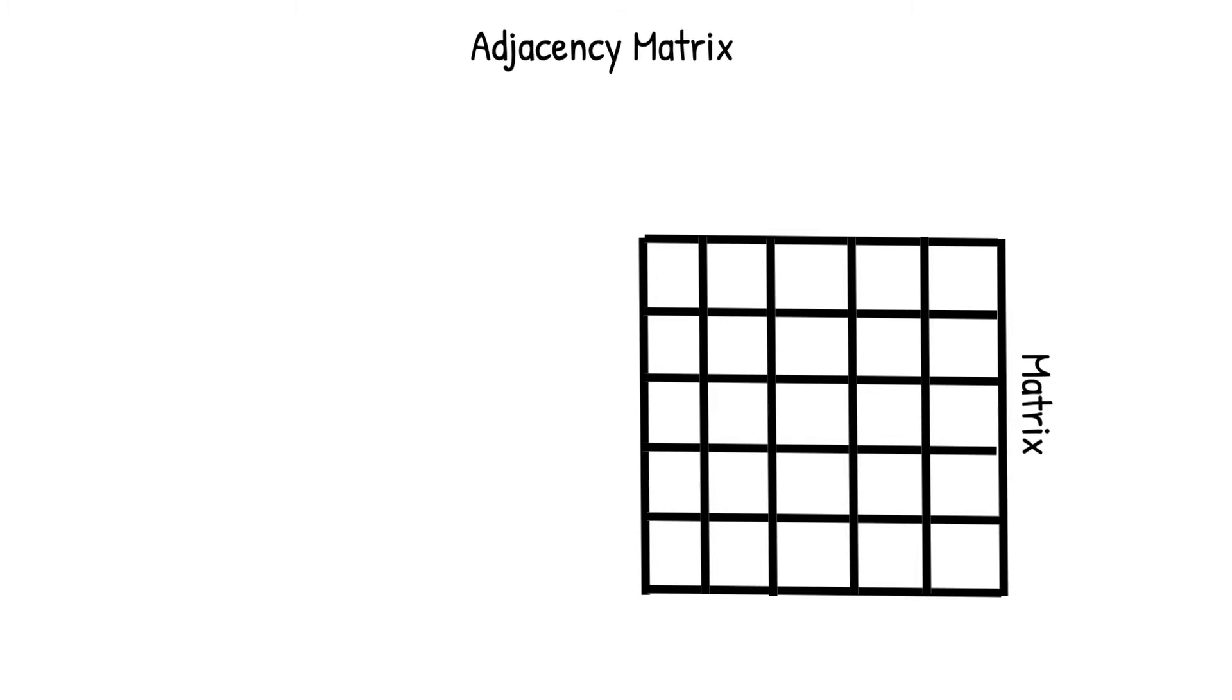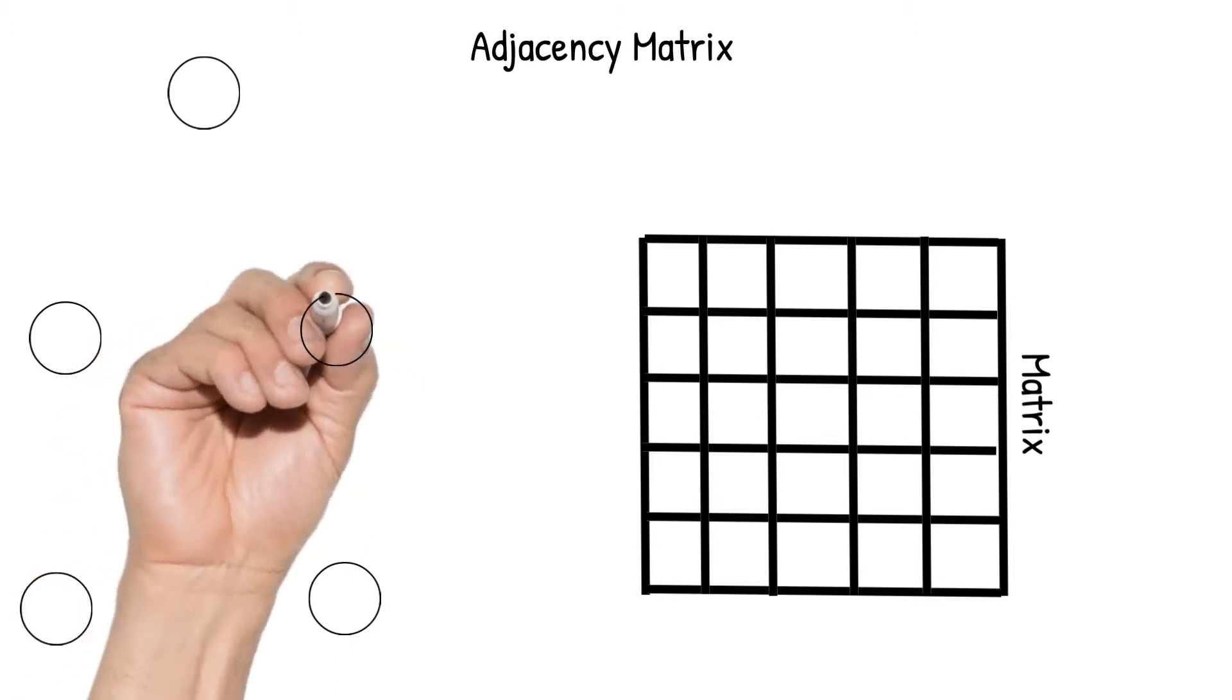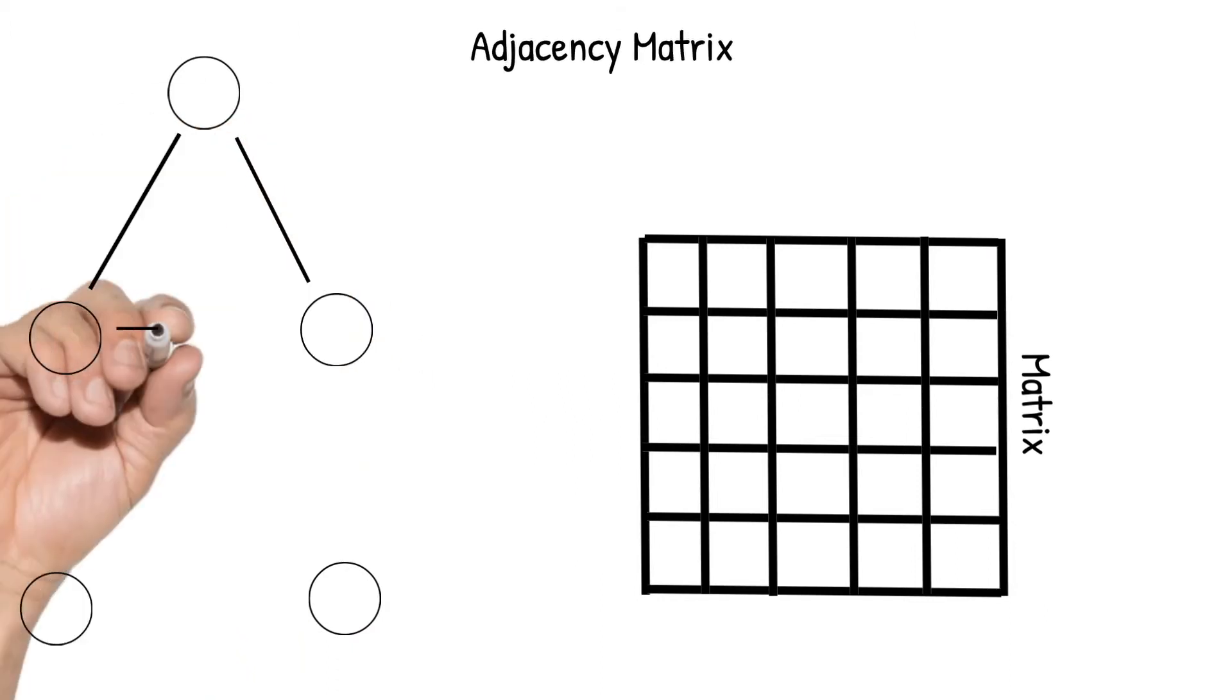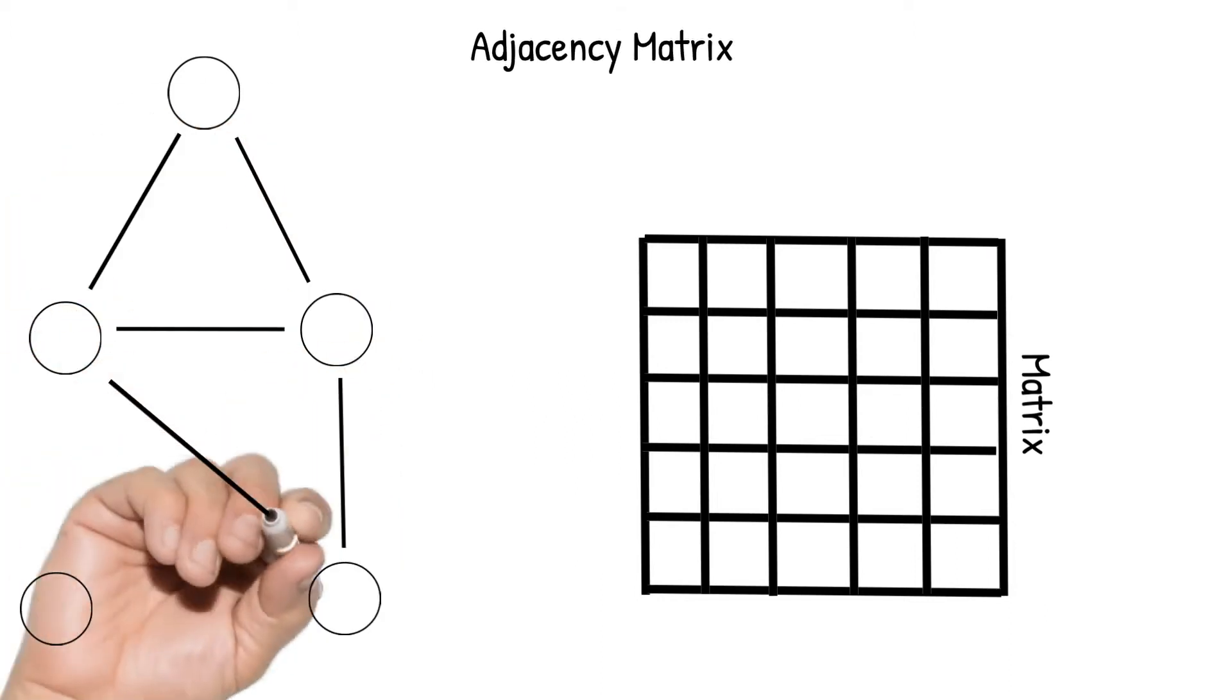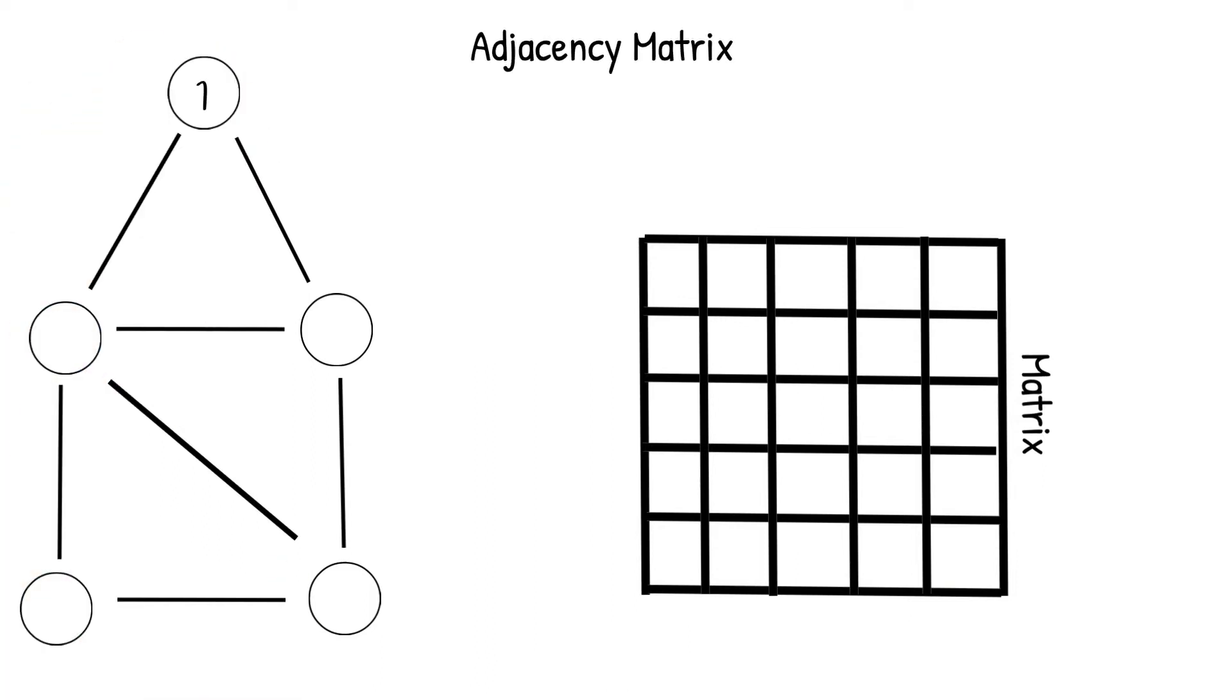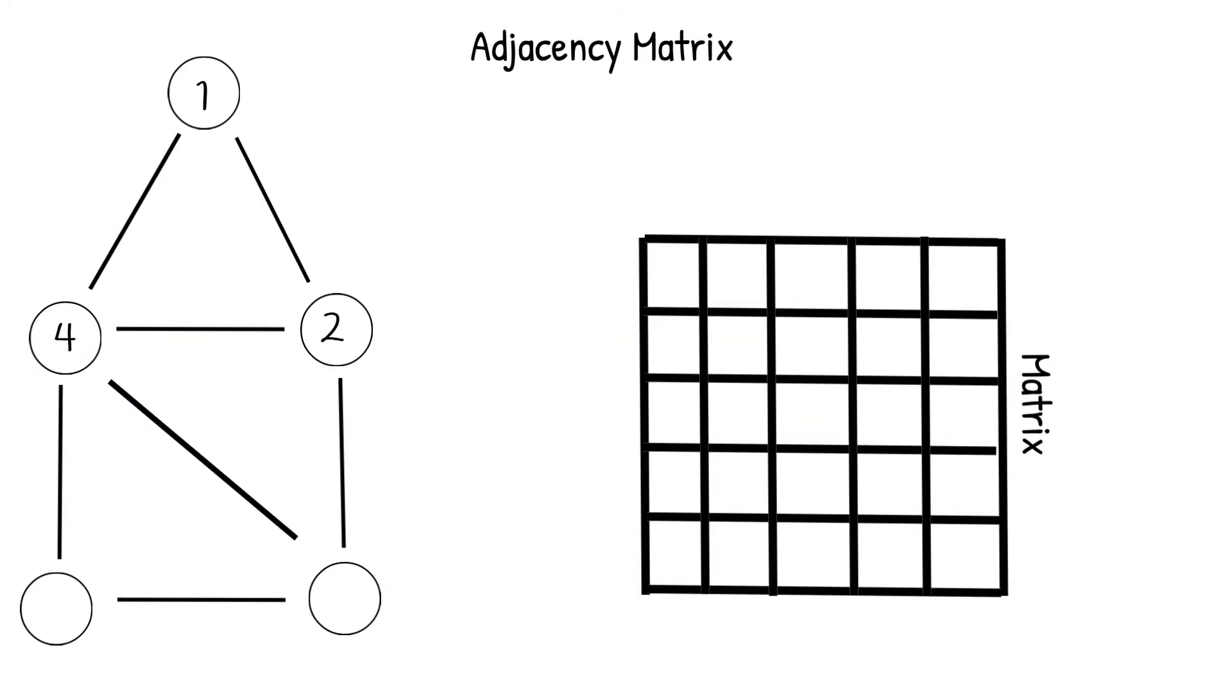Let's start by drawing out our example graph. For this example, and for all examples throughout this video, we will use bidirectional edges to make undirected graphs. Each node will be referenced using a number. Our first node, node 1, will be adjacent or have an edge connection with nodes 2 and 4. Node 2 will be adjacent to nodes 1, 4, and 3, and so on and so forth.